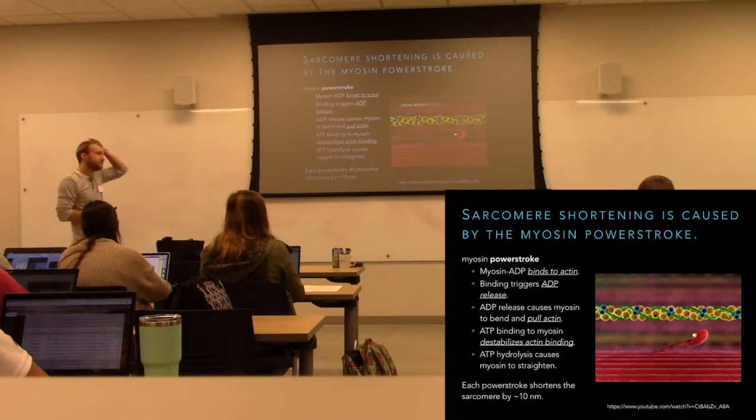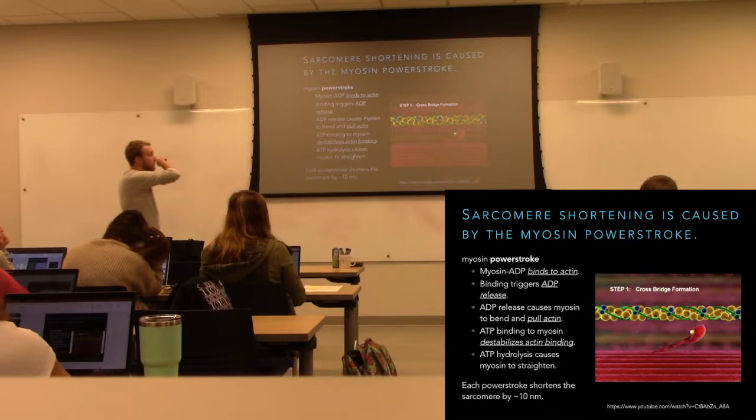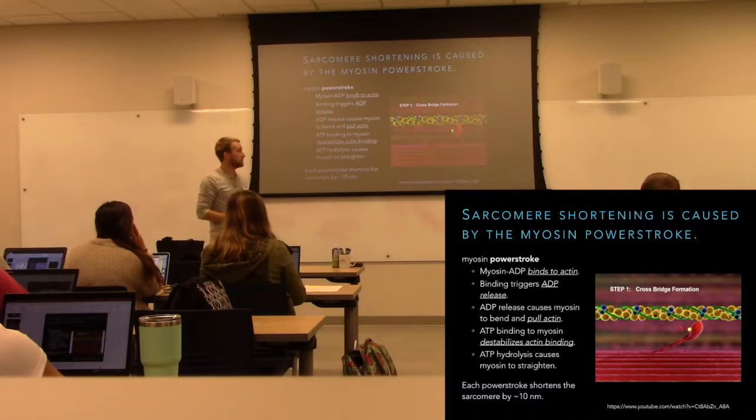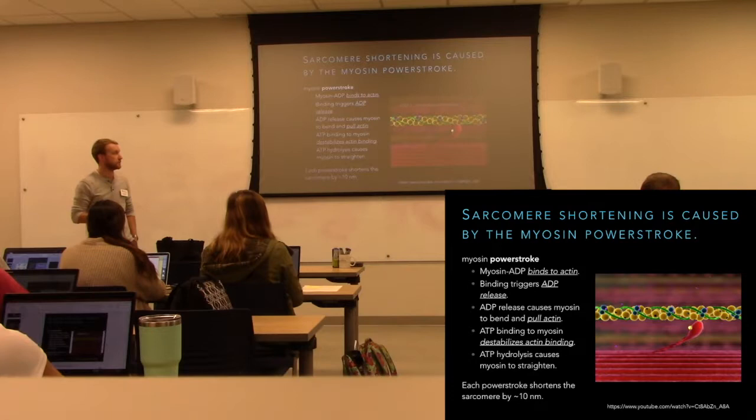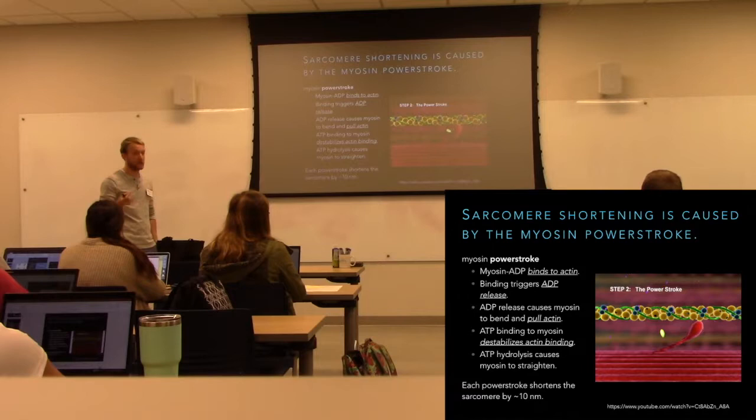In the cartoon format: to bind actin, myosin must have ADP bound — not ATP. It lets go of the phosphate to stabilize the interaction with actin, and holds on tightly. When holding on to actin, it can't hold on to something else — it's just one globular head. When it lets go, it flexes.